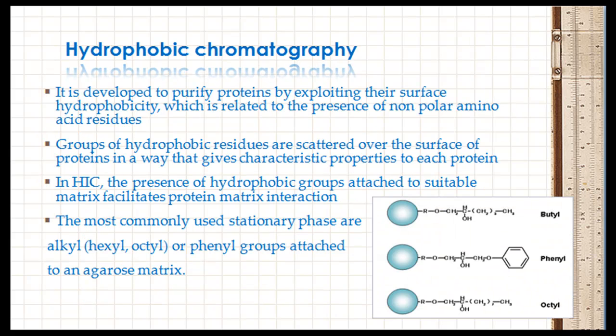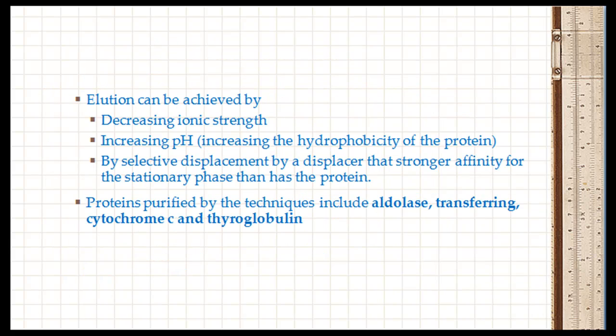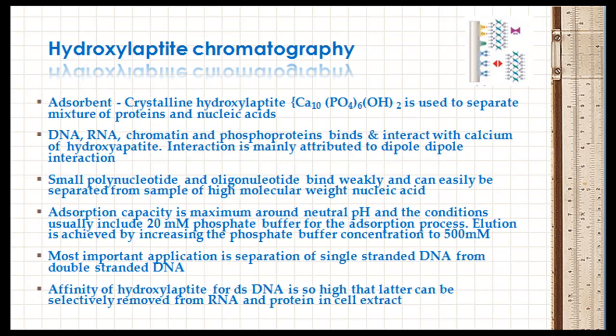Elution is achieved by increasing the phosphate buffer concentration to 500 mmolar. The most important application of hydroxyapatite chromatography is the separation of single-stranded DNA from double-stranded DNA. The affinity of hydroxyapatite for double-stranded DNA is high, and the latter can be selectively removed from RNA and protein in cell extracts.